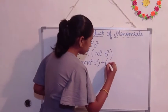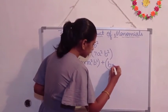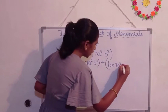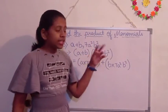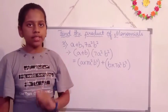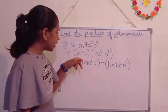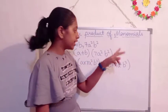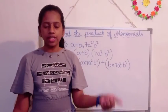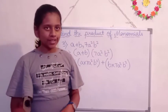And then we are going to write B into 7A square B square. Here 7A square B square is the common term. Why? Because in the first term also 7A square B square is there, and in the second expression also 7A square B square is there. So it is common here.